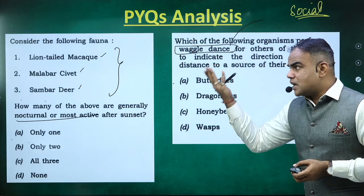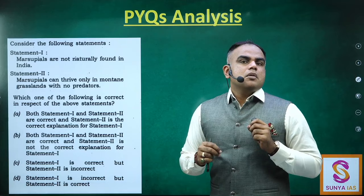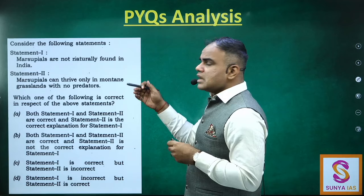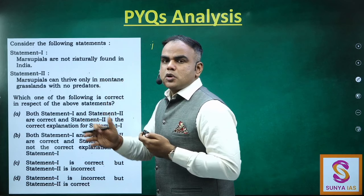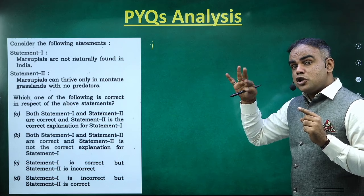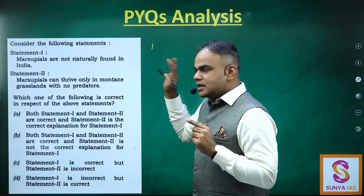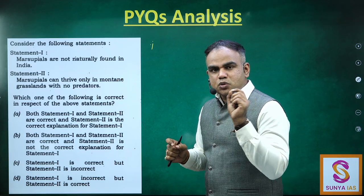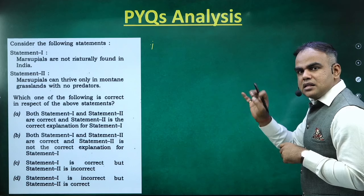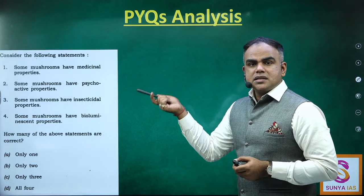Another question asks which organism performs a waggle dance. If you followed recent current affairs, you also saw dancing frogs mentioned. Some bird species are famous for their mating dance. The examiner is going one step beyond what we normally read — typically we limit ourselves to distribution or IUCN status. For some species, we should go one step beyond. Then there is a question about marsupials — we generally read about the normal category of mammals and don't cover marsupials or monotremes. These two-statement questions can sometimes be solved through elimination due to extreme statements.